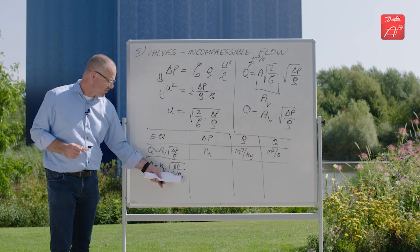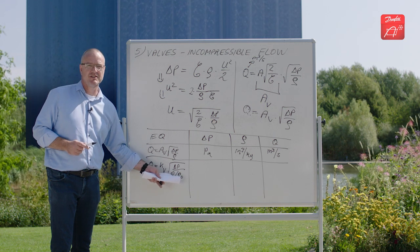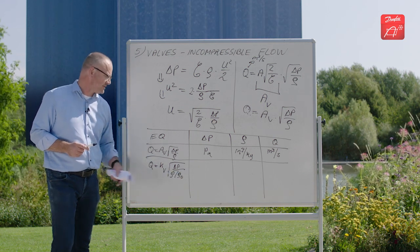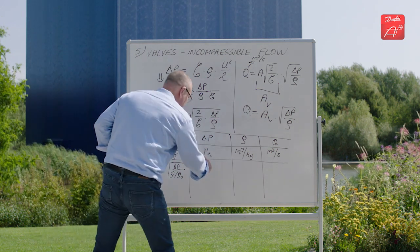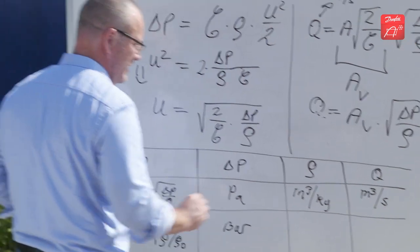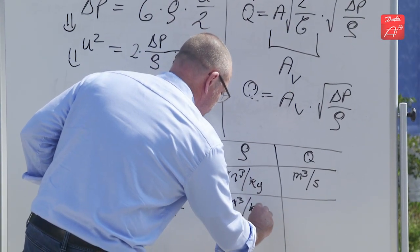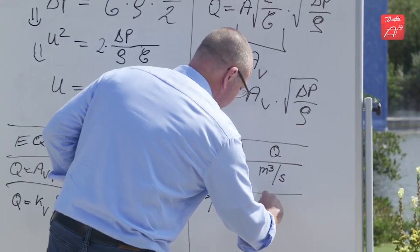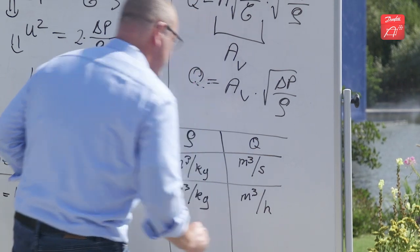So this value, density zero or rho zero, is just water at 20 degrees, so it's a density of a thousand kilograms per cubic meter. If you use this equation, the pressure drop is expressed in bars, the density is still kilograms per cubic meter, and the flow is in cubic meters per hour.